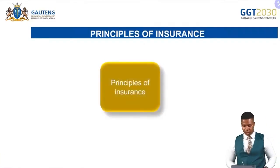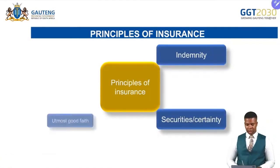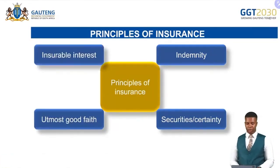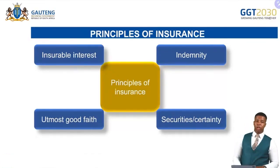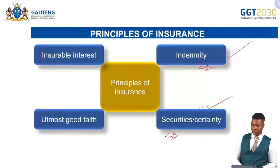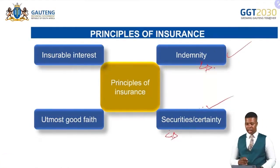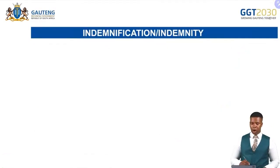Principles of insurance: we have four principles. The first is the principle of indemnity; the second is the principle of security or certainty; the third is the principle of utmost good faith; and the fourth is the principle of insurable interest. Insurance is based on the principle of indemnity — indemnifying one if the asset is lost or damaged — while assurance is based on the principle of security, securing the future of the insured at retirement, or securing dependents.